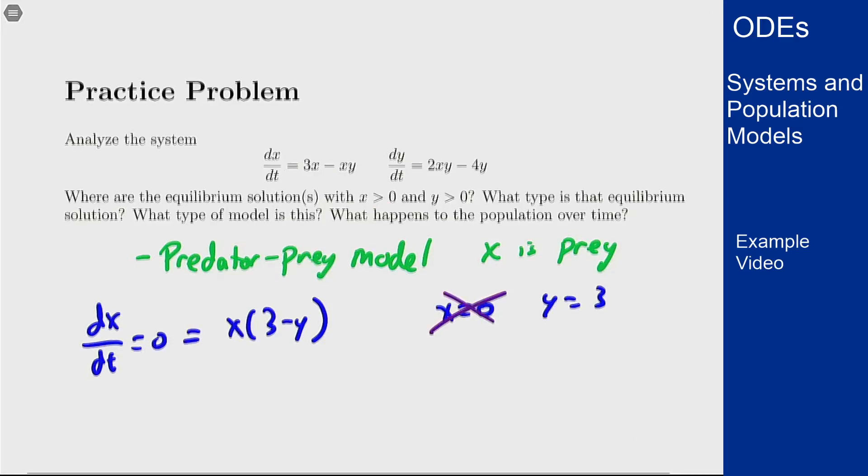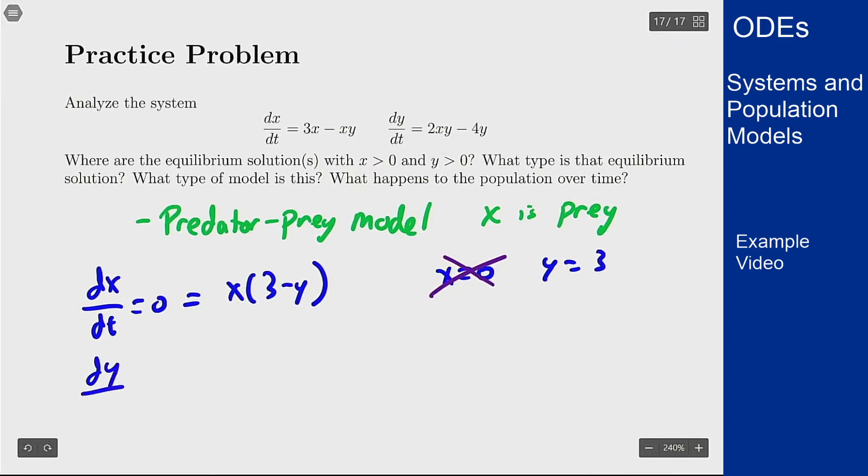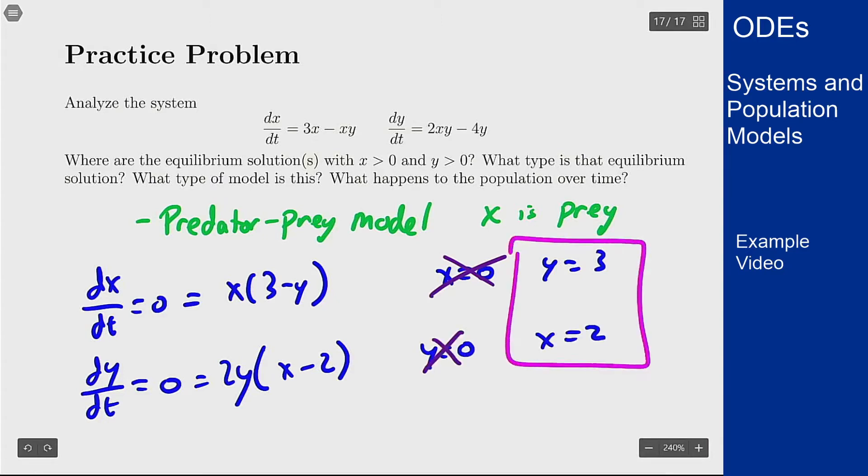And for the y equation, for dy/dt to be 0, this factors as 2y times (x - 2). So we could have y equals 0, which I'm going to ignore, or x equals 2. So what I want here is x is 2 and y is 3.